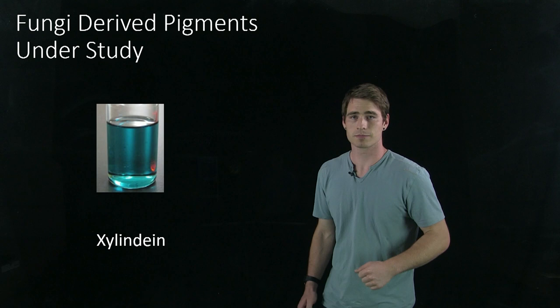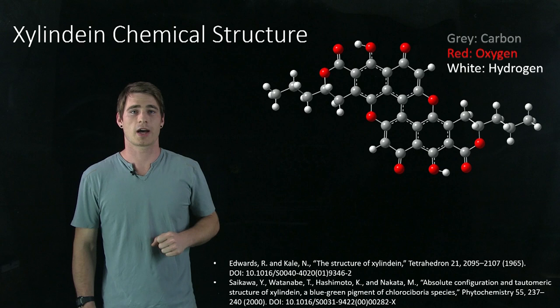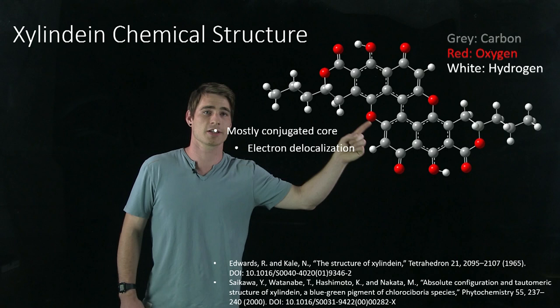Xylundine's chemical structure has this characteristic conjugated core structure, which is key to its optoelectronic properties. This is because when you have a conjugated core like this, the electron wave functions will overlap with each other, and that means electrons can move freely along this backbone.